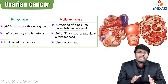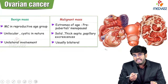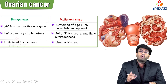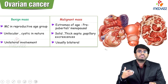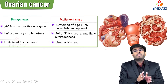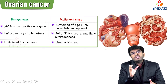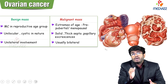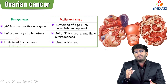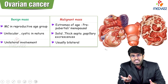Benign ovarian tumors are mostly seen in reproductive age group women. On the contrary, malignant ovarian tumors are seen at extremes of ages — pre-pubertal age group and post-menopausal women. So if there is a tumor in a reproductive age group woman, it can most likely be benign. If there is an ovarian mass in a post-menopausal woman, that mass can be mostly malignant in nature.